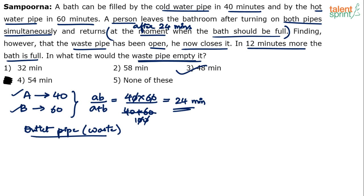I'll repeat the explanation and put some steps on paper, because some of you may not follow verbal explanation alone. Unless you follow the smart method of cutting down the number of steps and solving mentally, you won't score more in exams. There are two pipes A and B and a third outlet pipe. A does the work in 40 minutes, B in 60 minutes, so together A and B do it in 24 minutes — whether you use AB/(A+B) or 1/A + 1/B, both give 24 minutes.